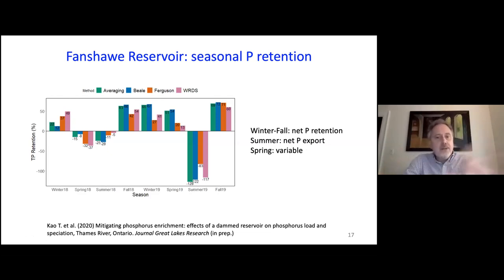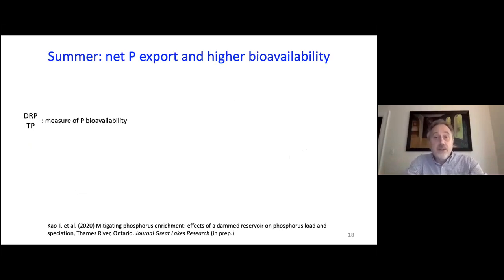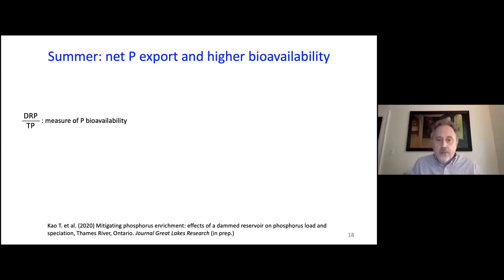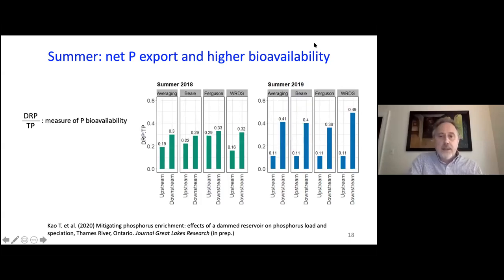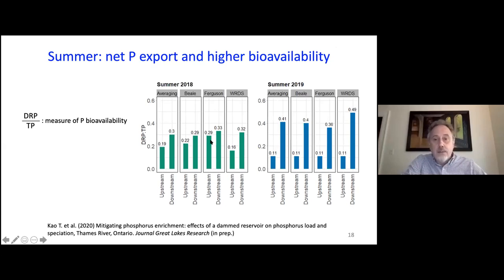We want to know why we have net export during summer. In addition to net export, we also see higher bioavailability of phosphorus exiting the reservoir than entering. As a measure of bioavailability, we use the ratio of dissolved reactive phosphorus to total phosphorus — the highly bioavailable fraction. Results for summer 2018 and 2019 show consistently that this ratio is higher in the outflow than in the inflow. Somehow the processing happening in the reservoir increases the proportion of reactive, bioavailable phosphorus coming out compared to what came in.